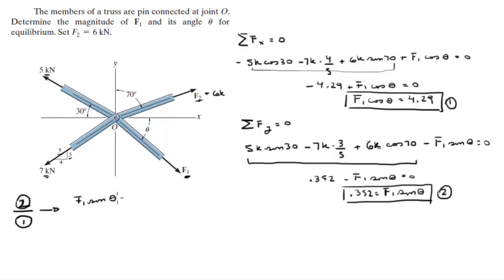F1 sine of theta is equal to 0.352 divided by what's formula 1. I'm sorry, what's formula 1? F1 cosine of theta is equal to 4.29.